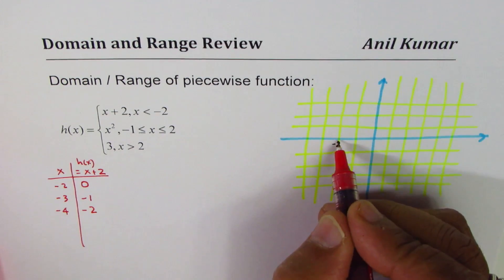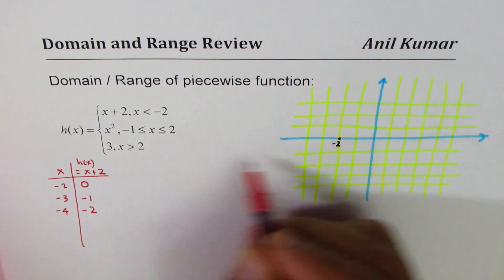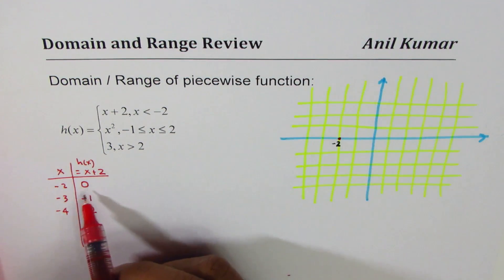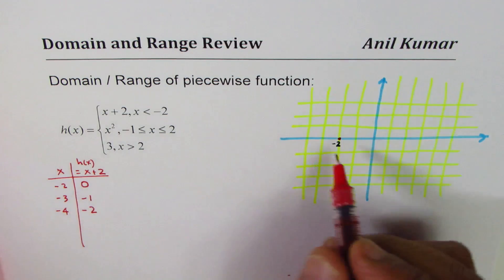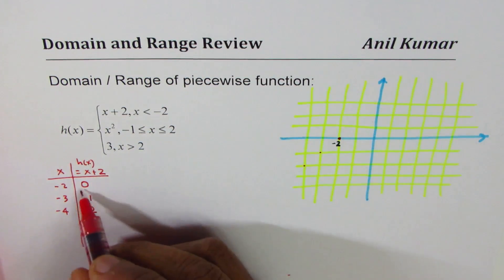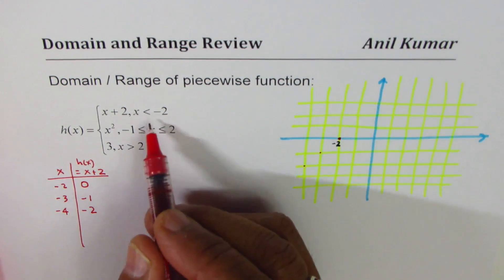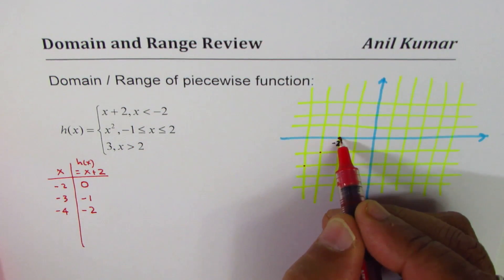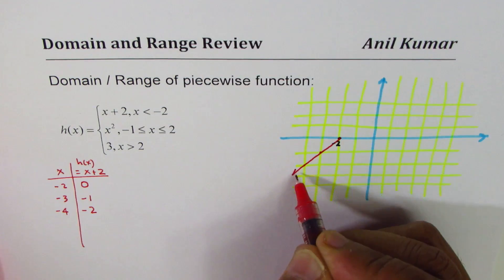So the points are these. As you move left by one unit, so 0, minus 1, minus 2. And it continues. So that means I could draw it with a line like this and an arrow.